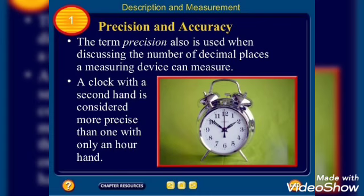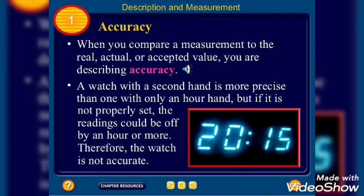So, a clock with a second hand is considered more precise than one with only an hour hand. Because it can give us a bit close to exact figures. When it is having two hands, then it gives a close idea, a proximity, close proximity. It leads us very near to accuracy.